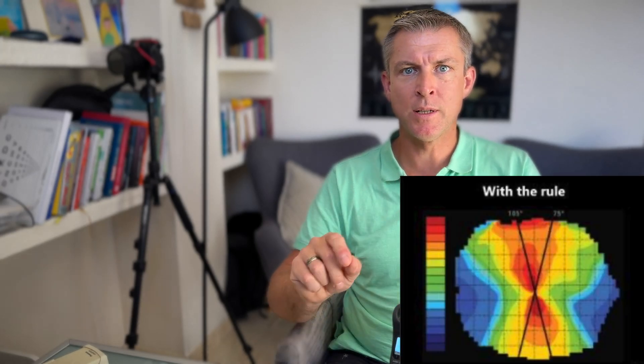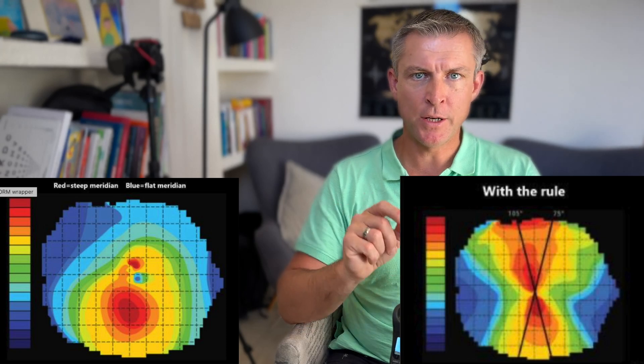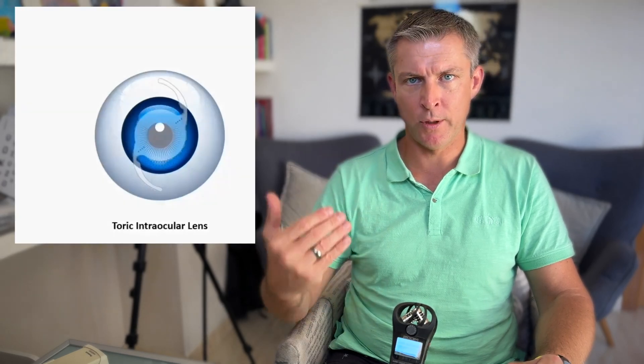In severe astigmatism, patients may experience visual distortions such as vertical lines appearing tilted. There are essentially two types of astigmatism: regular and irregular. Regular astigmatism — the rugby-ball shape — can be corrected using special toric intraocular lenses. Irregular astigmatism, however, involves an unpredictable uneven corneal surface that cannot be compensated for by any manufactured lens. This video focuses on regular astigmatism.